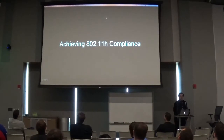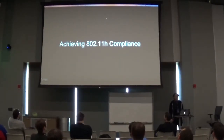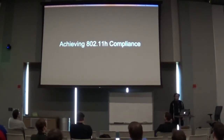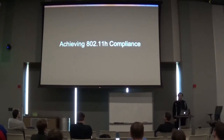The second challenge is that if we're going to do rogue AP attacks using 802.11n, in order to unlock the full potential of the 5 gigahertz spectrum, we need to achieve something called 802.11h compliance.